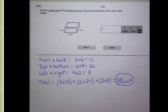And so taking a look at this, we need to find the area of all six faces. So the front and back would be two times six, which is twelve. The top and bottom is going to be six times four, which is twenty-four. And the left and right sides are going to be four times two, which is eight.